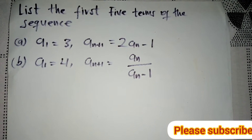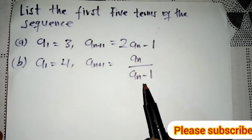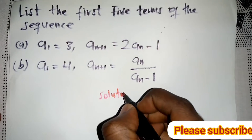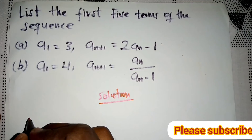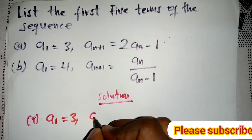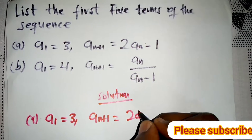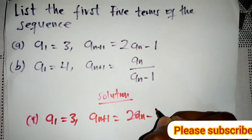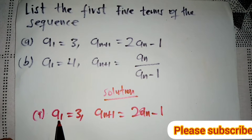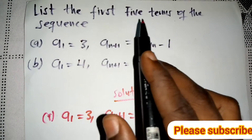Hello students, welcome once again. We have a question here — we should list the first five terms of the sequence. We have the first term a1 equal to 3, given this recursive term. In this sequence, the first term is a1 = 3, and we have to list the first five terms.